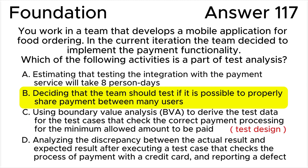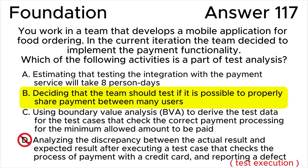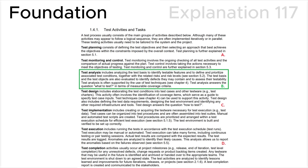Answer C is wrong because using test techniques to derive coverage items is a part of test design. Answer D is wrong because reporting defects found during dynamic testing is a part of test execution. My recommendation: please figure out all test activities with examples and explanations.